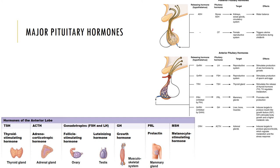Follicle stimulating hormone (FSH) promotes ovarian follicles to develop in females and, in conjunction with luteinizing hormone, stimulates the secretion of estrogens. In males, FSH promotes the physical maturation of sperm, released in response to gonadotropin releasing hormone from the hypothalamus. Luteinizing hormone (LH) induces ovulation in females and promotes the secretion of estrogen and progesterone. In males, it stimulates the production of sex hormones called androgens, specifically testosterone, released in response to gonadotropin releasing hormone from the hypothalamus.